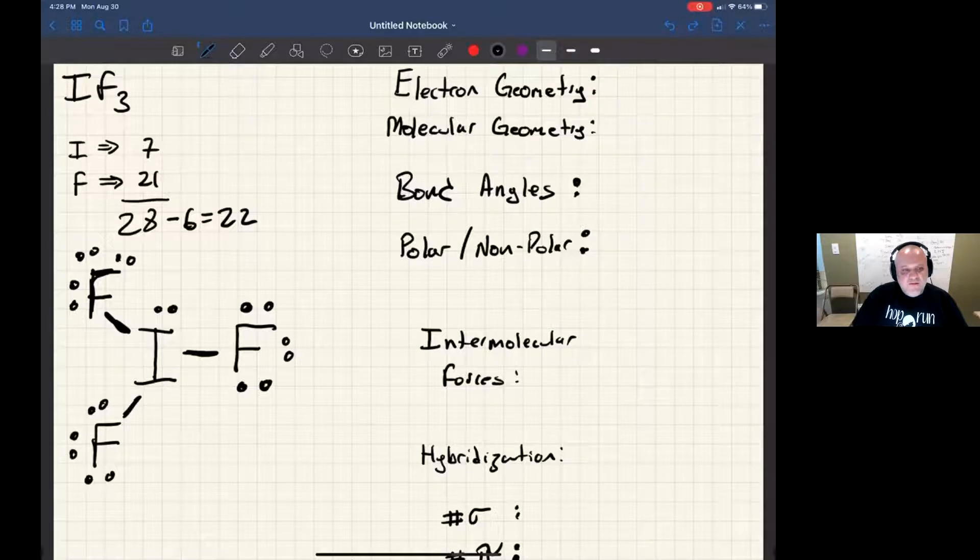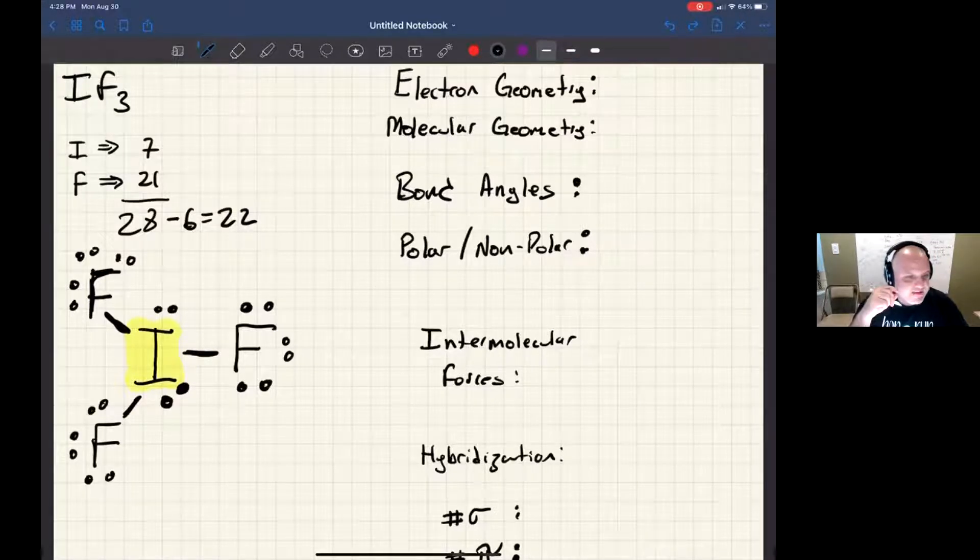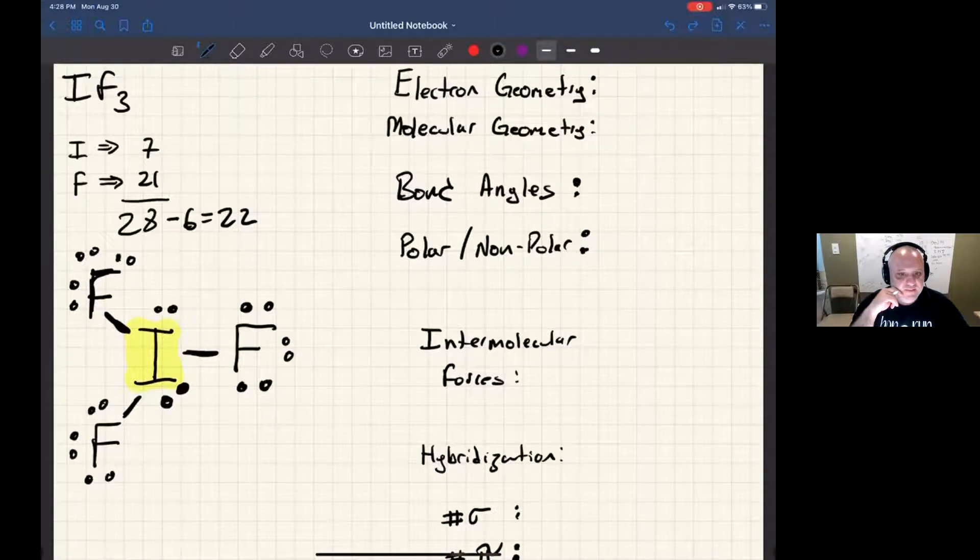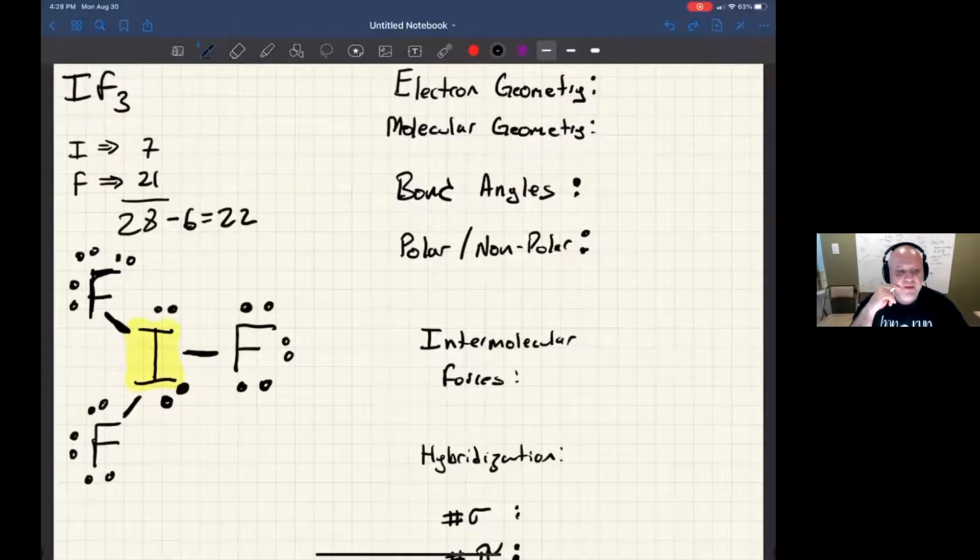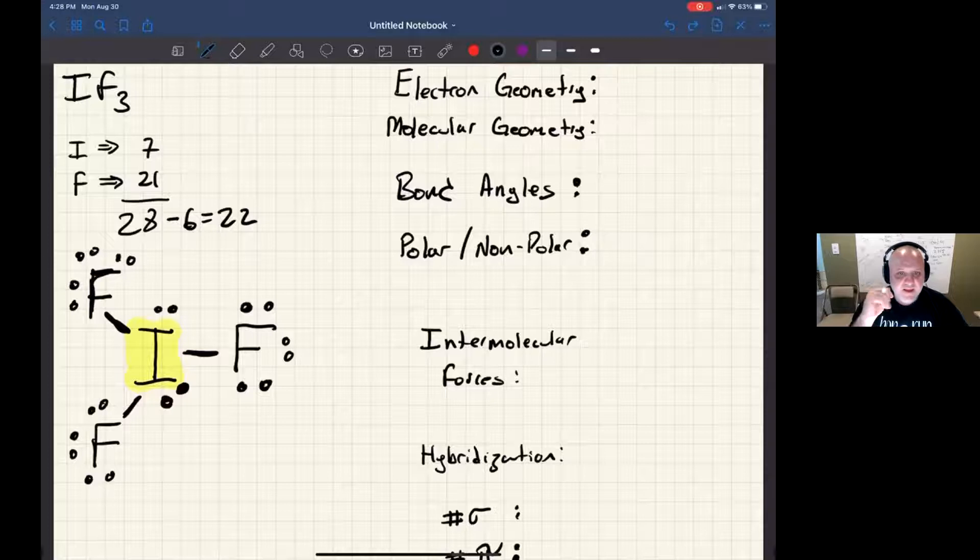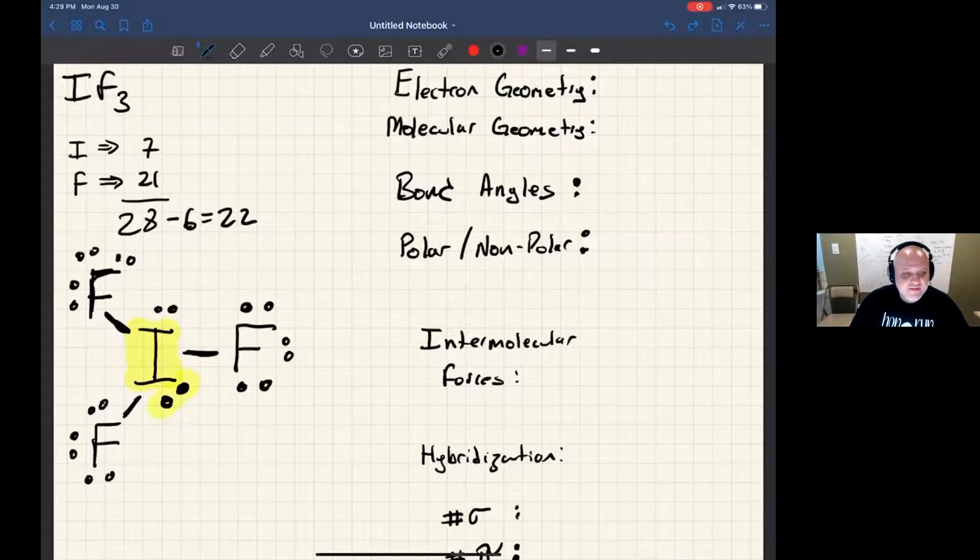Well, iodine is one of those things that can have an expanded octet. Remember that anything after essentially silicon and above has access to d orbitals, and those d orbitals can mix into the valence bonding scheme. In this case, something can be considered complete if it has eight, 10, or 12 electrons. In this case we see the extra two plus the other eight, so this one would be 10 electrons. At the end of the day we've got octets on everything, so we're done there.